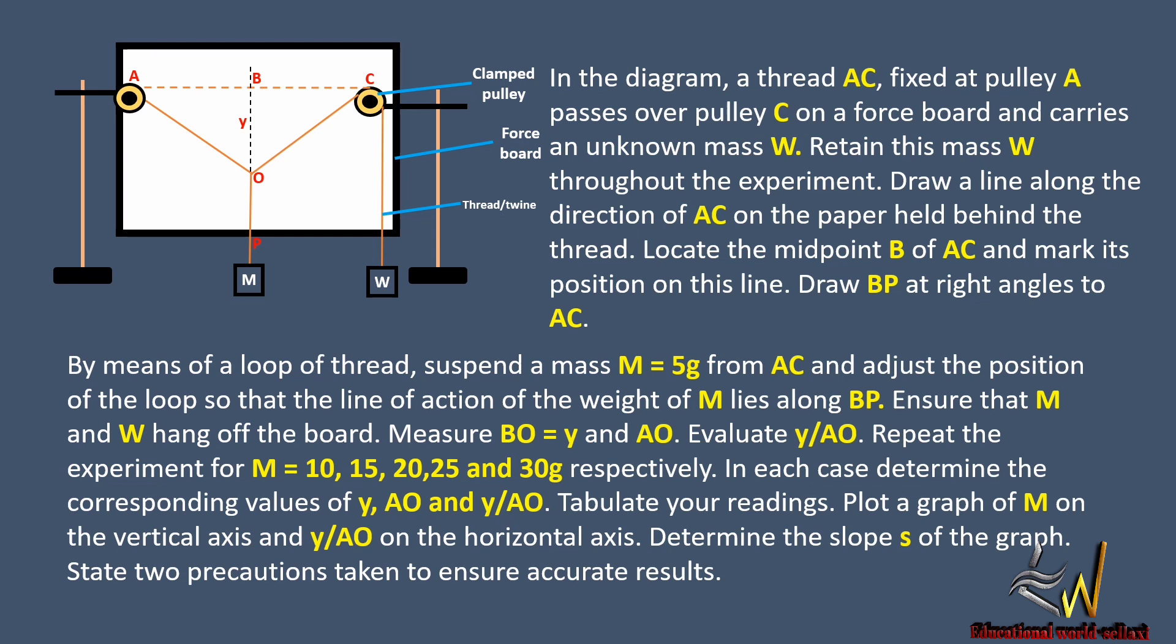Measure OB which is equal to y and AO. Evaluate y over AO. Repeat the experiment for M equal to 10, 15, 20, 25, and 30 grams respectively. In each case, determine the corresponding values of y, AO, and y over AO. Tabulate your readings. Plot a graph of M on the vertical axis and y over AO on the horizontal axis. Determine the slope of the graph and state two precautions taken to ensure accurate results.